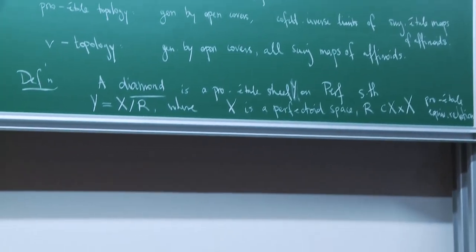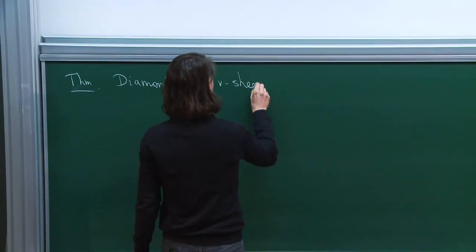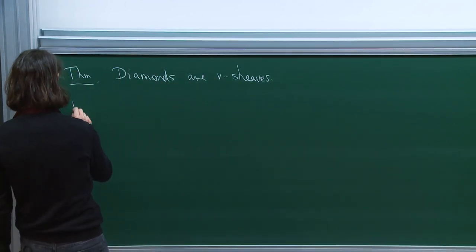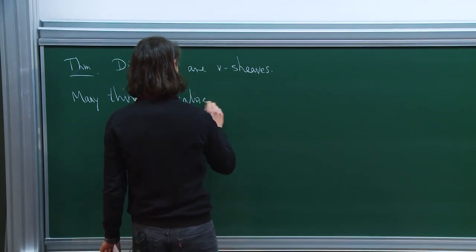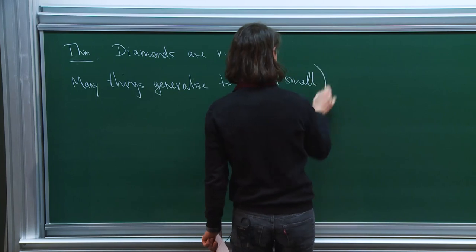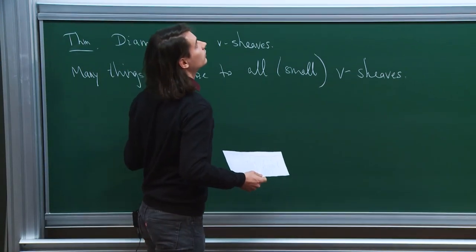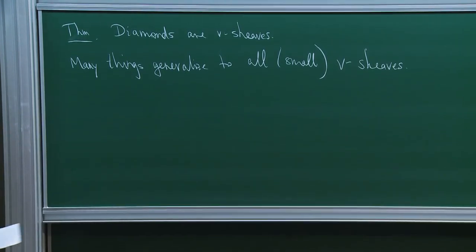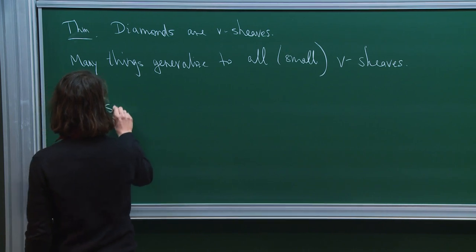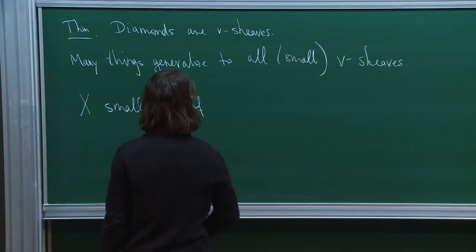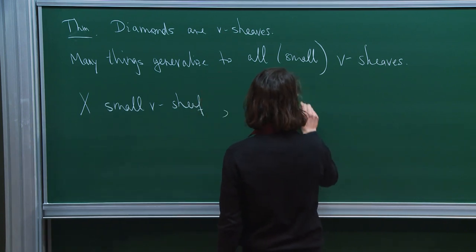There was a theorem that all diamonds are V-sheaves. In fact, many things generalize to all — and maybe with a set-theoretic condition — small V-sheaves. So in particular, if X is a small V-sheaf and lambda is a coefficient ring such that n·lambda = 0 for some n not divisible by p, everything new today will require this assumption.